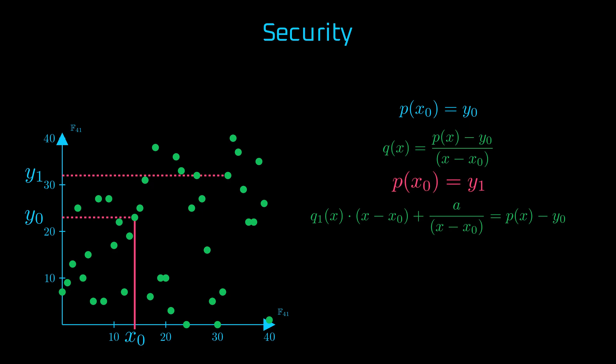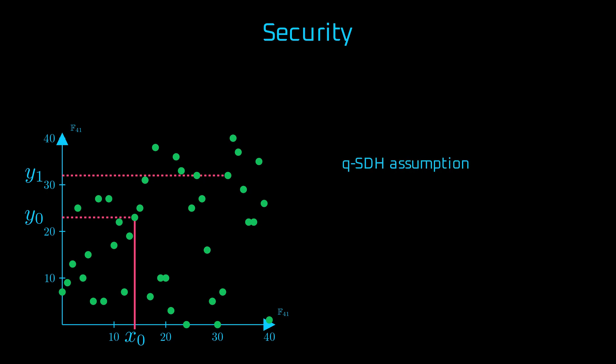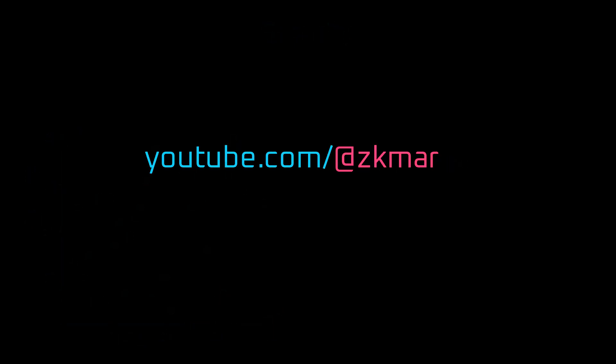If they try this division with a fake y1, they'll be left with a remainder, making the proof impossible to construct. All of this relies on a Q-strong Diffie-Hellman assumption that extends the traditional Diffie-Hellman one, ensuring that computing fake proofs with pairings is computationally infeasible. Thanks for watching ZK Marek channel.